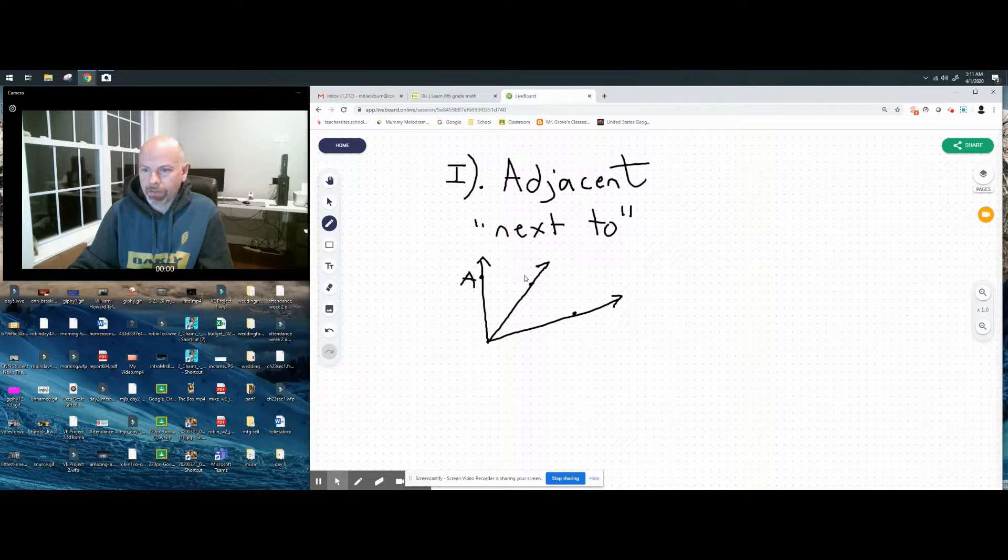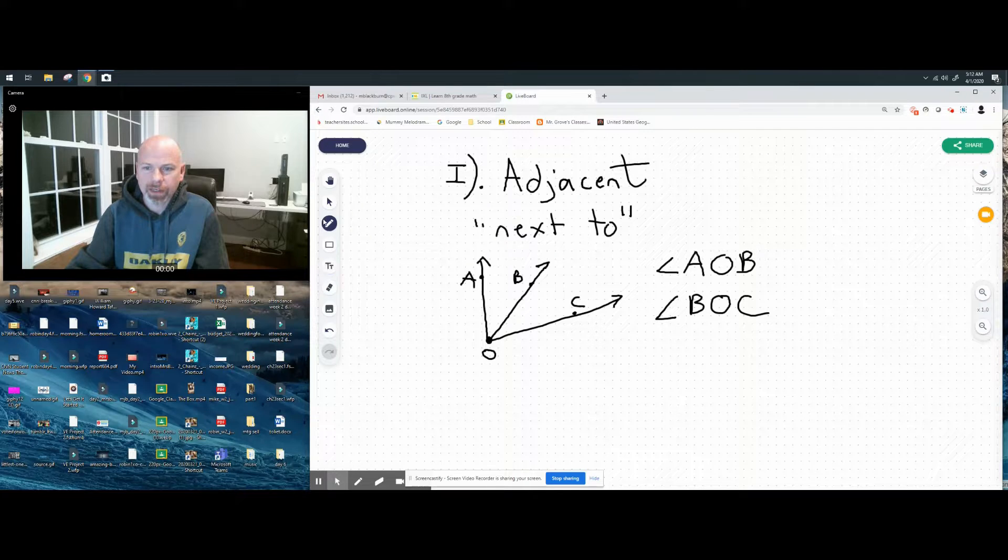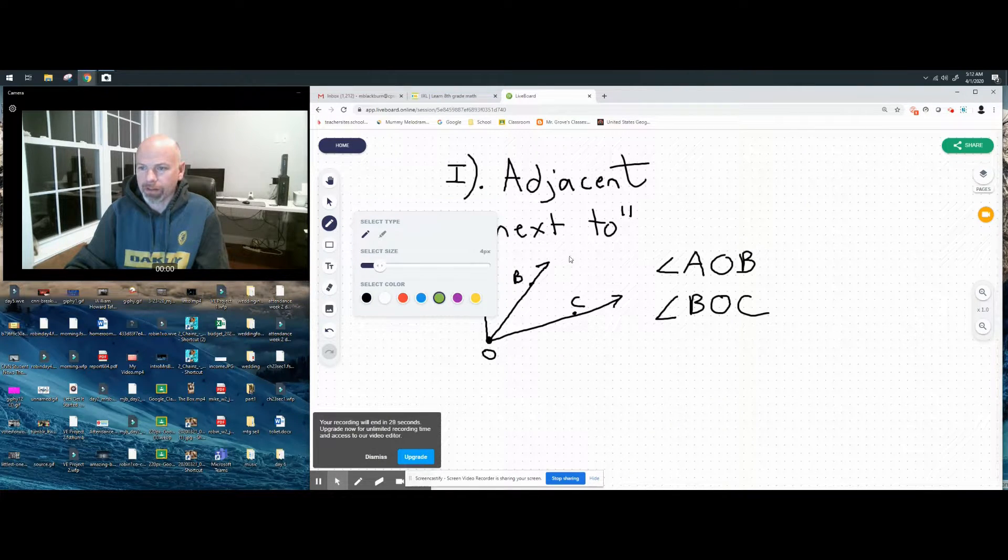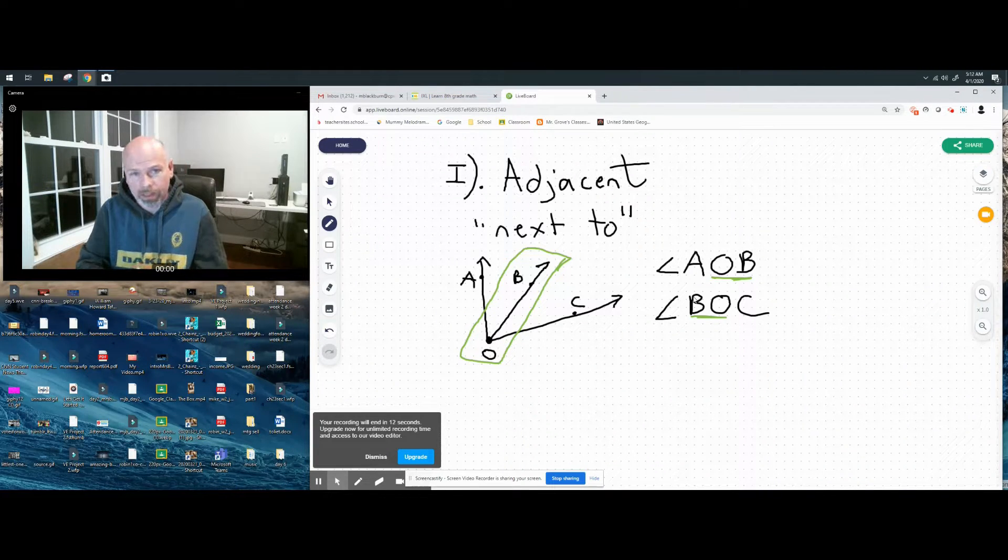In math, adjacent angles are two angles that share a side and they share a vertex. Let's say we have this diagram. We have the points A, B, and C in this vertex O. Which angles are adjacent? Angle AOB is adjacent, next to angle BOC or COB. Why are they adjacent? Because they have something in common, they have something that they share. They both have OB involved - that's what they share: vertex O and that side OB or ray OB.